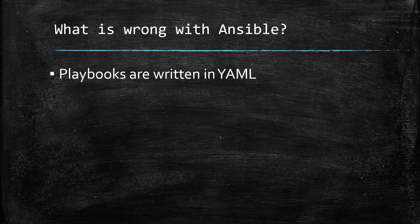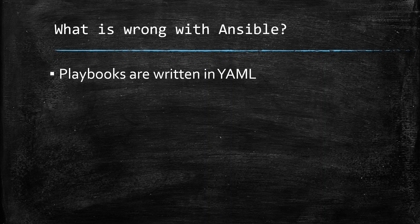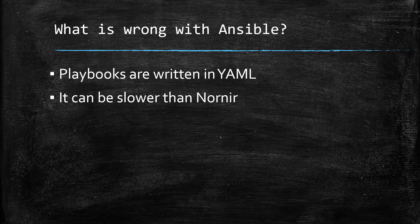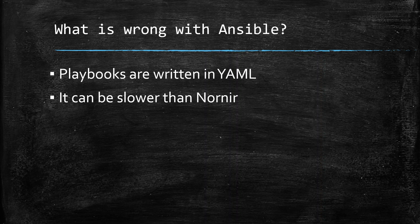The playbooks are written in YAML. Now if you know Ansible, you know YAML. It's a domain-specific language, it comes with very little debugging, so if you're trying to troubleshoot a playbook problem within YAML it can be quite painful. It can be slower than Nornir. So if you're automating 50 devices with Ansible, it's going to be absolutely fine. If however you are automating hundreds or thousands of devices, Ansible could struggle, and Python and Nornir are tools which will run those tasks a lot faster.